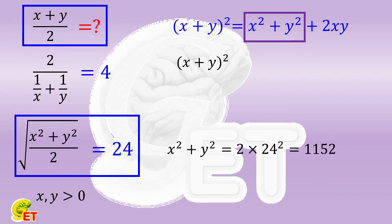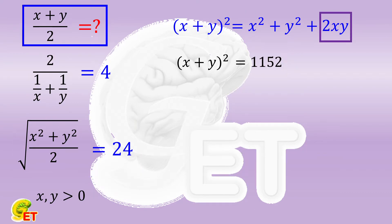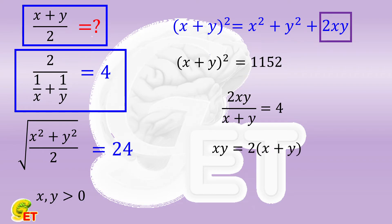This part is therefore done. For the last part, twice x times y, we start with the harmonic mean. Twice x times y over x plus y equals 4, so x times y equals twice x plus y. Twice x times y naturally equals 4 times x plus y.